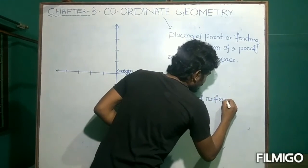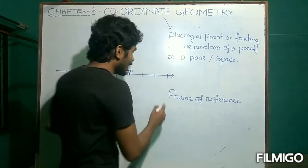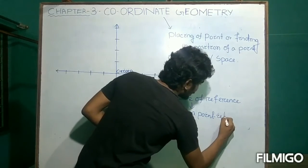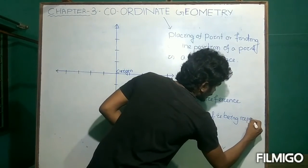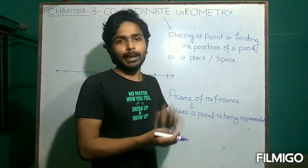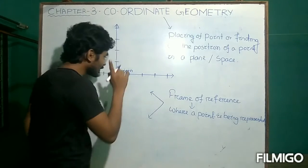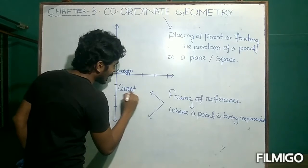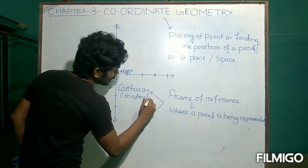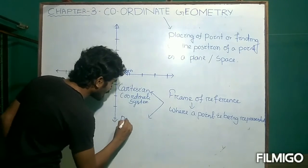What is a frame of reference? It is the frame where a point is being represented. A point can be represented in two frames. The first one is known as the Cartesian coordinate system, and the second one is the polar coordinate system.